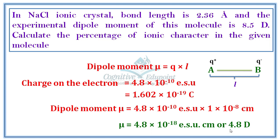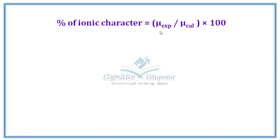So, one electronic charge separated by one angstrom gives 4.8 Debye. For NaCl with a bond length of 2.36 angstroms, we calculate the theoretical dipole moment. The percentage of ionic character is calculated as: (μ experimental / μ calculated) × 100%.